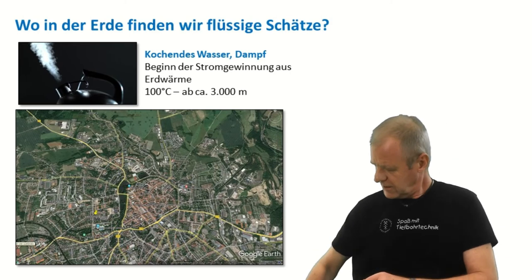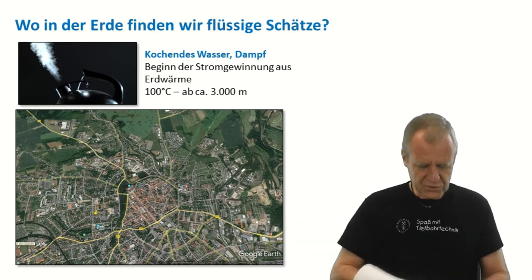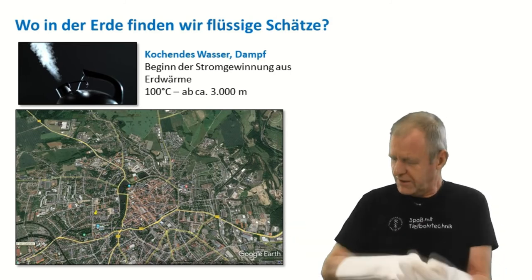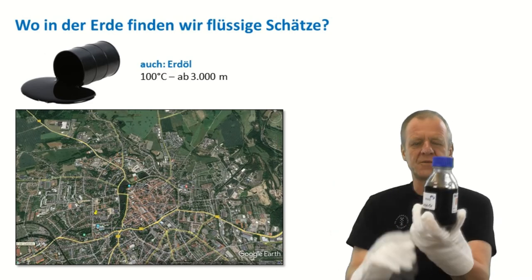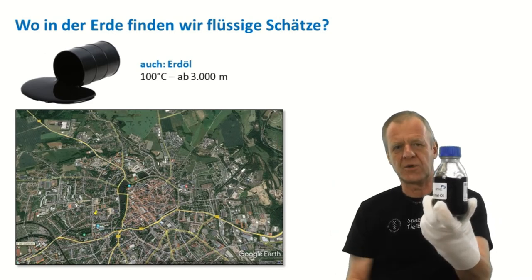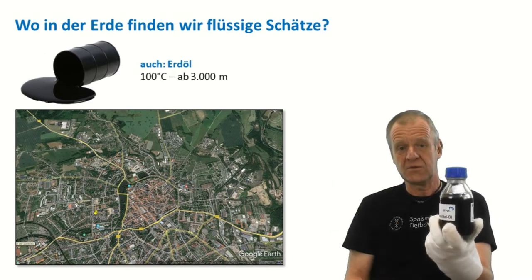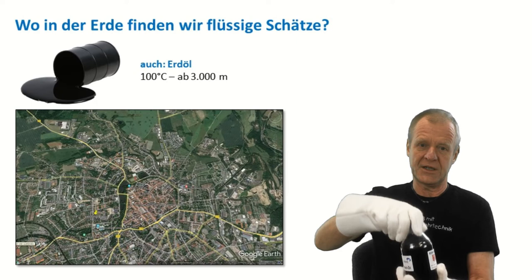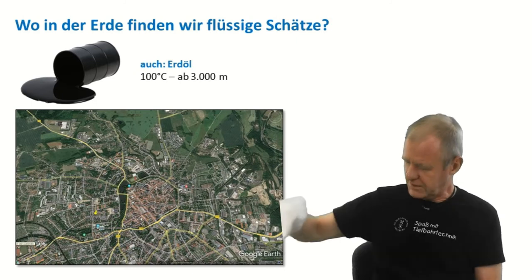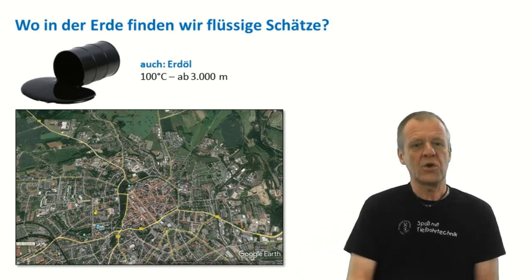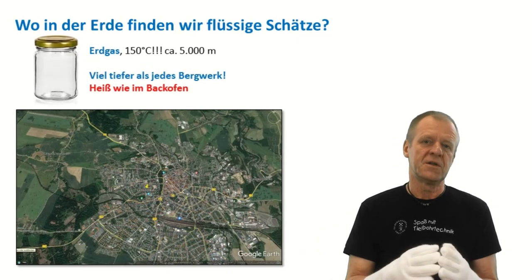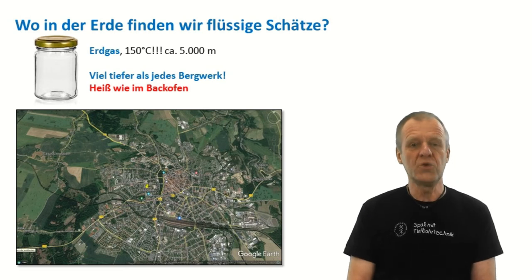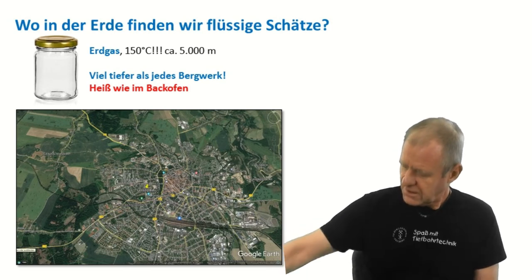At a depth of 3 kilometers, the temperature is about 100 degrees Celsius. That's why I have to put on these gloves to show you this crude oil sample. Crude oil is often found at this depth. If we go even deeper, let's say at a depth of 5 kilometers, the temperature is already 150 degrees Celsius. Here we can find typical natural gas deposits.